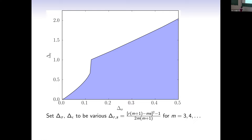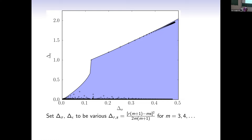One thing we can do is consider the Virasoro minimal models, where the scaling dimensions are given by the Kac formula for integer values of m greater than two. Making various choices for m and various choices for what operator we consider to be sigma, we can plot a whole bunch of points. We can also take tensor products of minimal models, and this tells us that every point marked in this plot is actually the leftmost point in a line of allowed theories that runs horizontally. All of these are honest, unitary conformal field theories — they have a Hilbert space interpretation, and their symmetries are generated by currents, i.e., they're local.